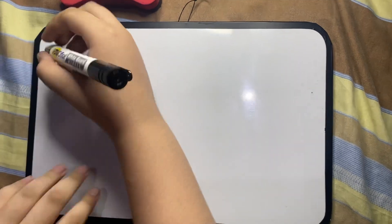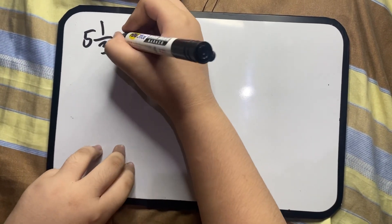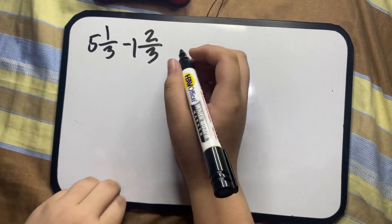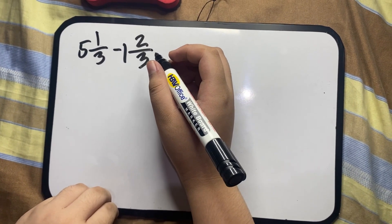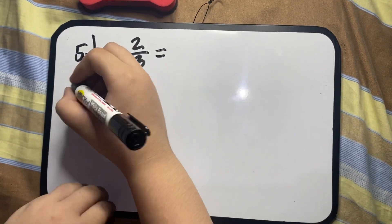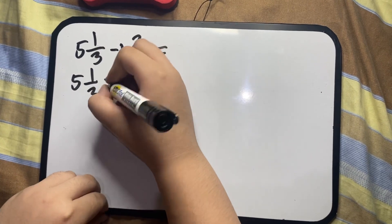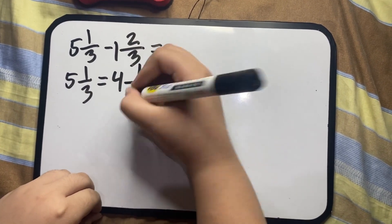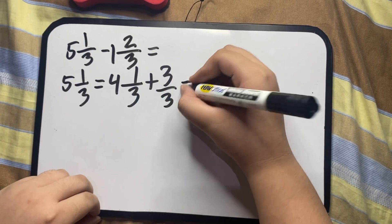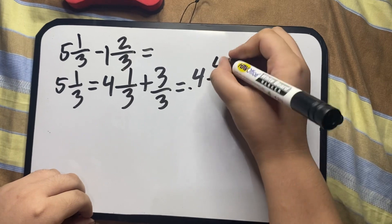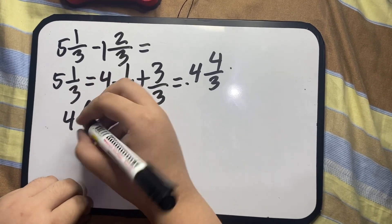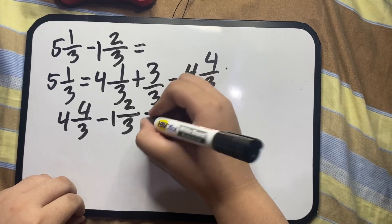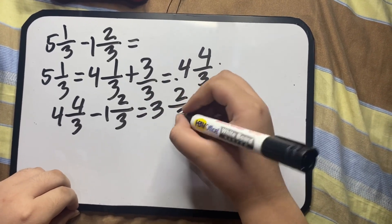Next, subtraction of mixed numbers with regrouping. Let's solve 5 and 1/3 minus 1 and 2/3. Since 1/3 is smaller than 2/3, we need to rename it by subtracting 1 from the whole number and adding it to the fraction: 5 and 1/3 equals 4 and 4/3. Then proceed with subtraction: 4 and 4/3 minus 1 and 2/3 equals 3 and 2/3. Here's the final answer.